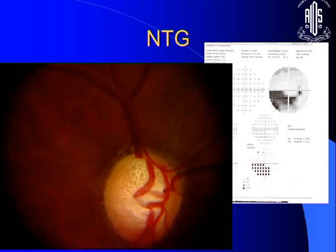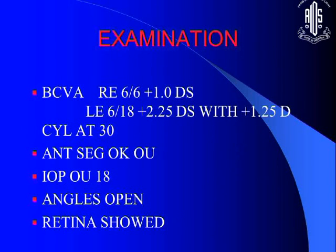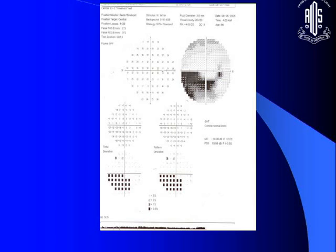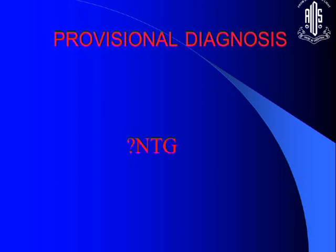You will have a disc change — a superior disc notch — and a symmetrical field defect in the inferior area, which is typical. To illustrate: a 57-year-old male came for a routine eye checkup. His left eye was amblyopic since childhood, pressures were normal, angles were open. One eye had classic glaucomatous disc changes; the other was the amblyopic eye with a somewhat abnormal disc. Diurnal variation, corrected for CCT by pachymetry, was normal. So this is normal tension glaucoma.